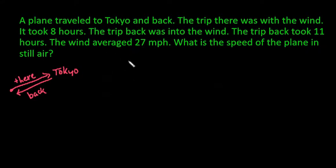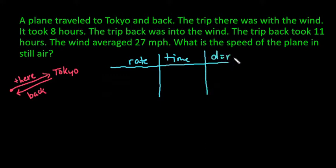So with this, I'm going to set up a little table so that we have our rate, our time, and our distance, which is equal to the rate times the time. And we have to Tokyo and we have back from Tokyo.